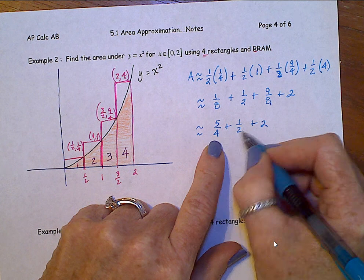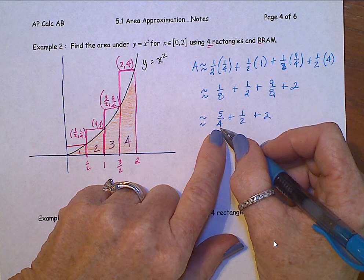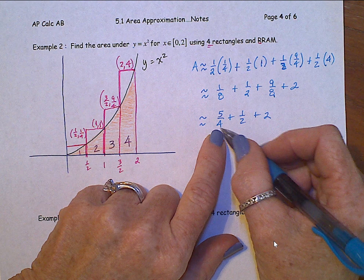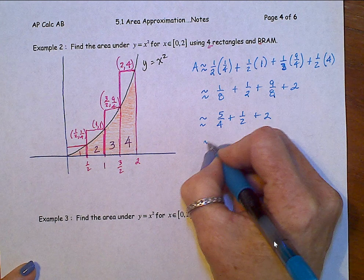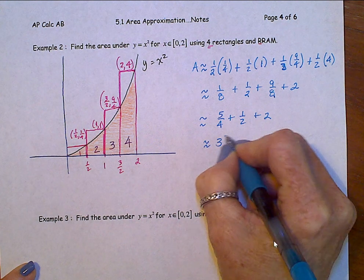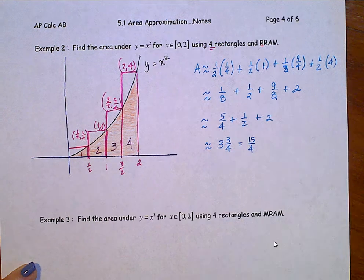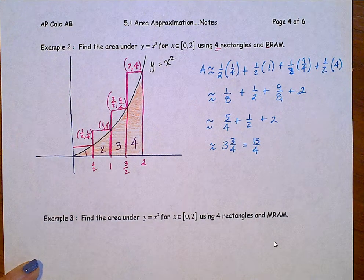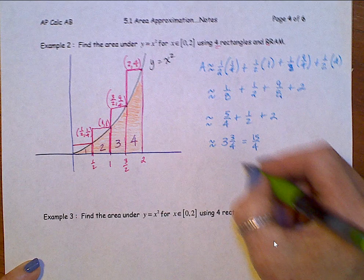We did this last time, 5 fourths plus a half, that's 1 and 3 quarters, 1 and 3 quarters plus a 2 is 3 and 3 quarters, which you may write as 15 fourths, or 3.75, whichever one makes you happiest. And we definitely see this is an overestimate of the actual area.